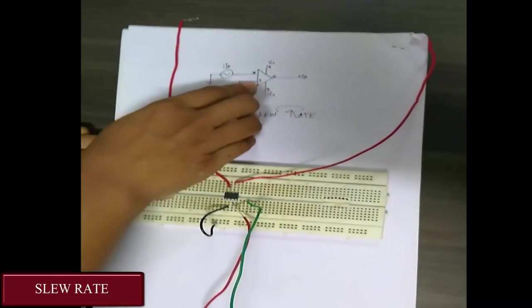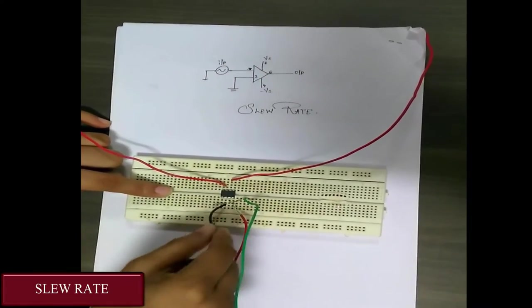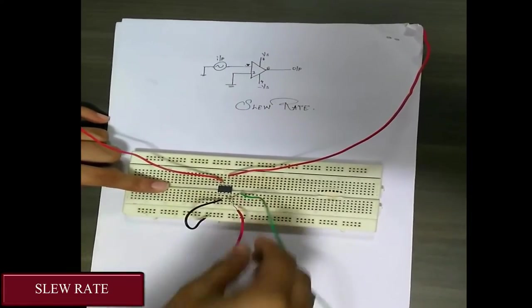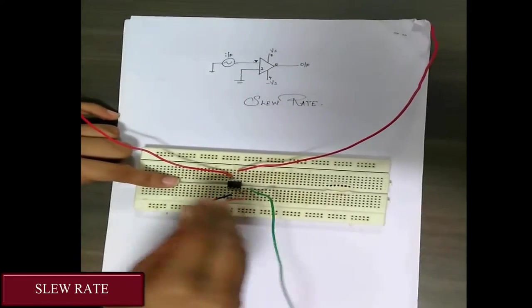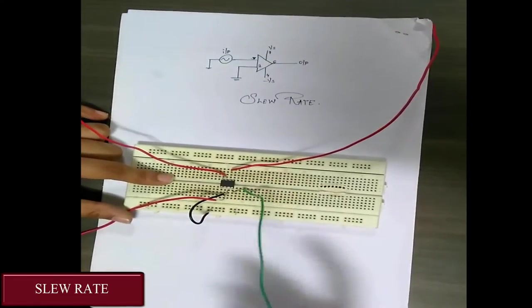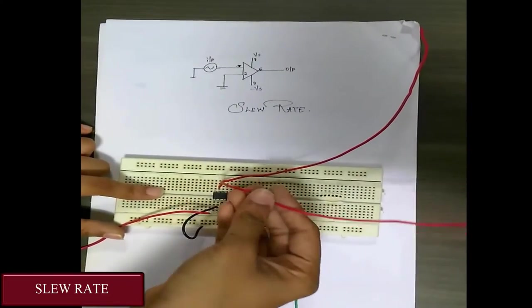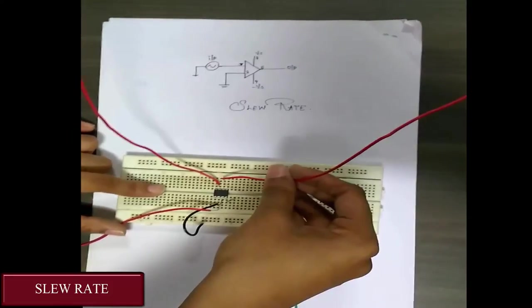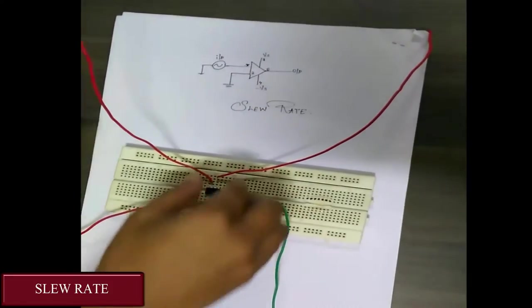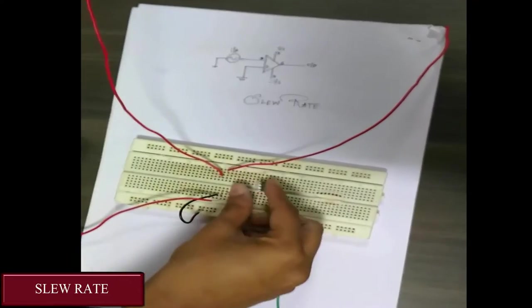Here as you can see, the second terminal of the IC is grounded with the help of this one. The third terminal is where input is given, whereas the fourth terminal is given for minus VS and the seventh pin is given for plus VS. From here we are going to obtain the output. Now this is IC741 as I don't know whether you can see it or not.